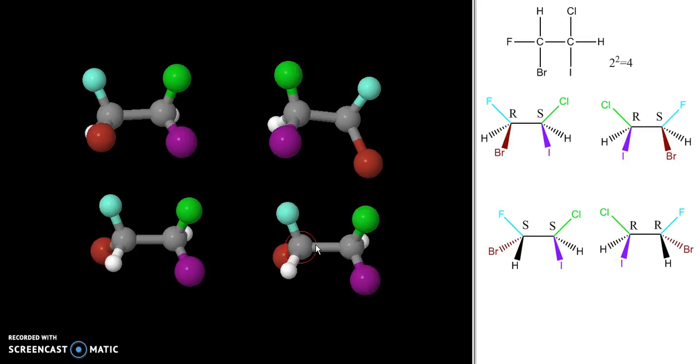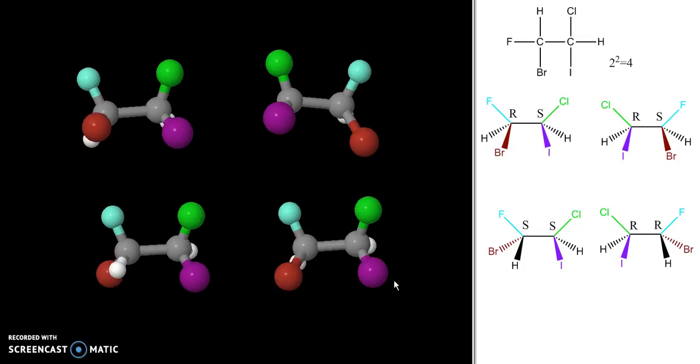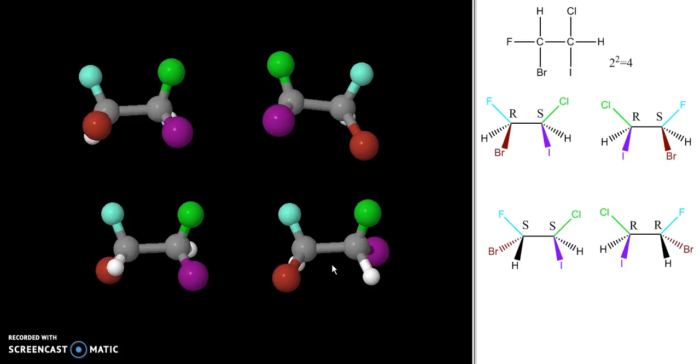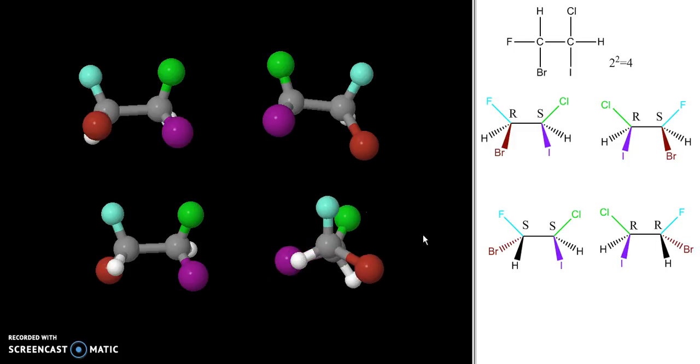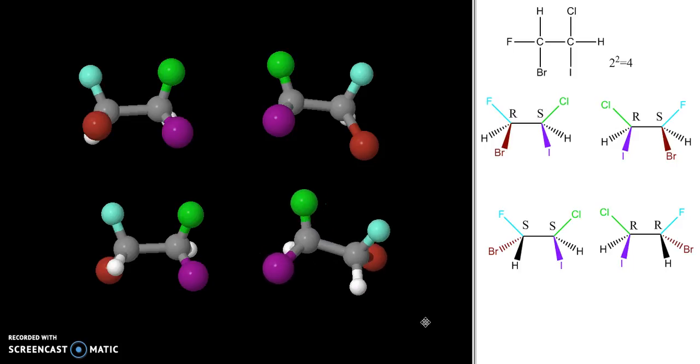So this is an exact copy of this one. To turn this into this mirror image, I switch these two groups, changing. Then I switch these two groups, changing the stereocenter. And if I want to display this one the way I've drawn it over here, I can just rotate this molecule like this. And now I have it the way it's shown over here. This and this are mirror images.